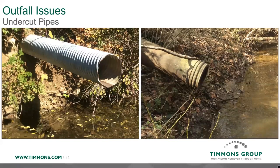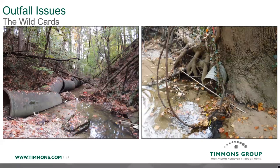As banks erode away, pipes can become undercut and eventually begin to hang over the stream. Over time these pipes will fall into the stream, and the outfalling water causes even more bank damage. Finally, we have wild cards — you just never know what you'll find. One culvert we believe was installed in the 1980s has fallen down the bank and now acts as a sort of wonky grade control for the left bank. And just a good reminder that nature will do what it wants — if a tree grows around an outfall, you have to work with that.